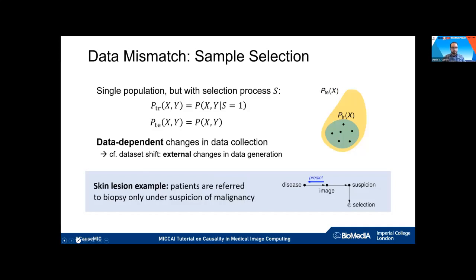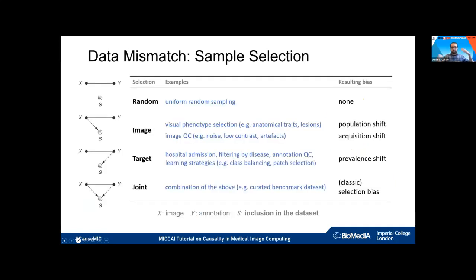The key difference between sample selection and dataset shift is that sample selection involves data-dependent changes in the collection process, whereas dataset shift involves exogenous changes from external causes. Returning to the skin lesion example: we don't biopsy everyone who comes to the clinic — only those whose images look suspicious. Benign cases are therefore underrepresented in the dataset. This is the kind of thing we can diagnose just by reasoning about the problem.